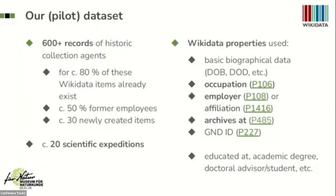We are focusing on cross-checking basic biographical information and specifying occupations in detail — not just 'zoologist' but also the subdiscipline, such as herpetology, ichthyology, or paleontology. We link to the museum as employer or affiliate, include the property for archives, and in many cases the GND identifier is already present. Other properties of interest include information about academic networks. Crucially, we are also working to connect persons to the collections.